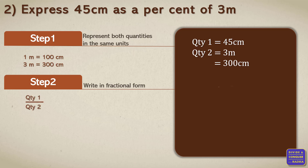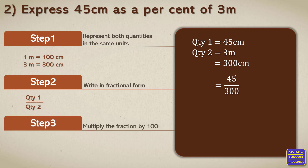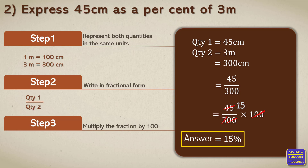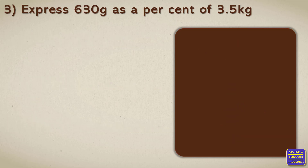Step two, we write this in fractional form: first quantity divided by second quantity, that's 45 upon 300. Step three, we multiply this fraction with 100. The zeros cancel, and 3 times 15 is 45, so the final answer is 15%. 45 centimeters as a percent of 3 meters is equal to 15 percent.